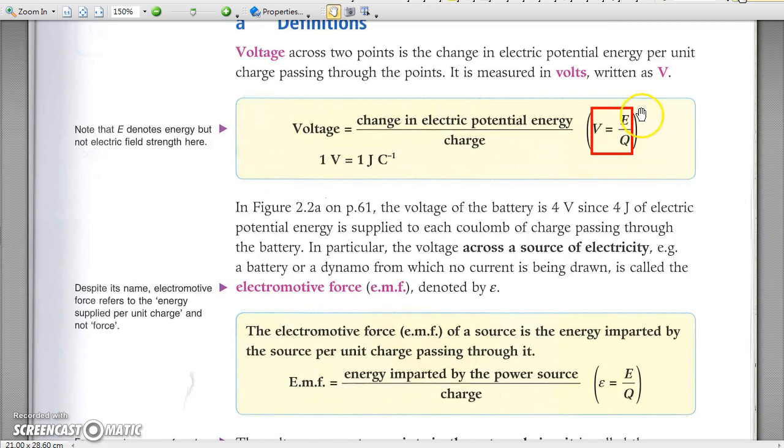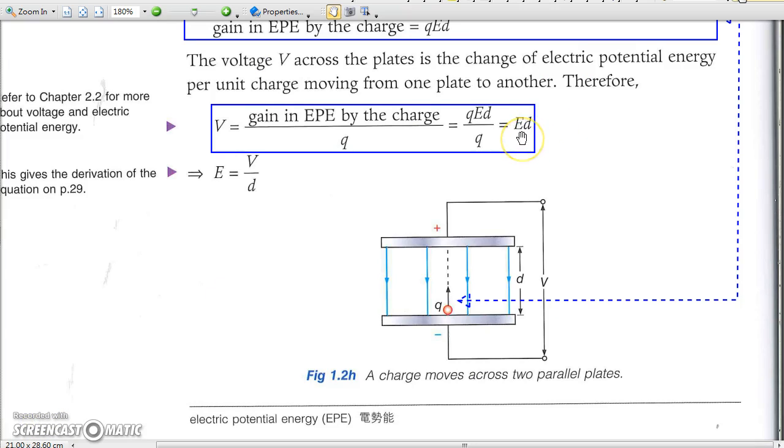Capital E, the symbol, may have two different meanings in different cases. In this equation, capital E is the energy, while on that page, capital E stands for electric field strength.